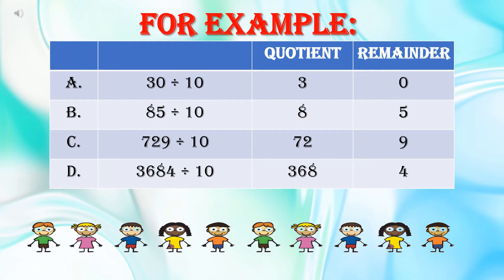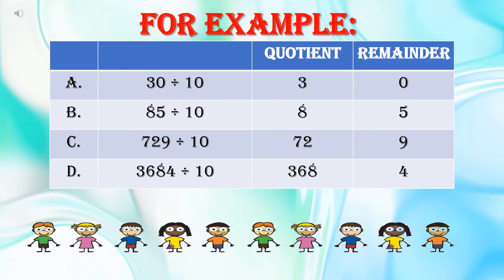Next example is 85 divided by 10. अब इसमें ones place पर क्या है? 5. So 5 is the remainder and 8 is the quotient, क्योंकि बाकि सिर्फ 8 बचा है।